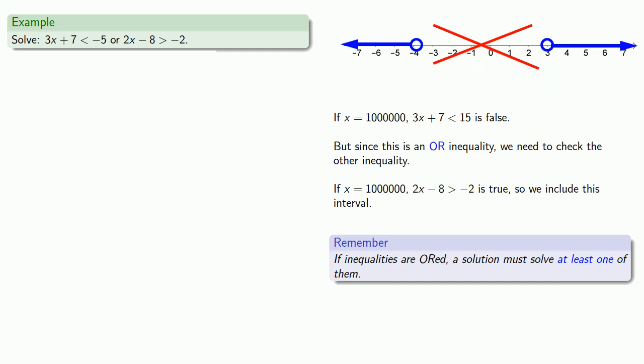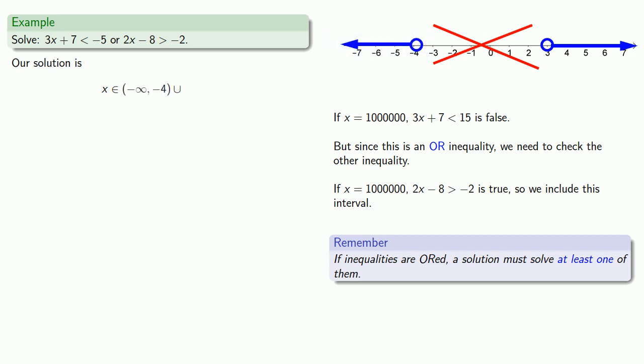Now that we have the graph of the solution, let's go ahead and write our solution in interval notation. There are two intervals that will be unioned together. This first interval goes from negative infinity up to negative 4, excluding negative 4. And this second interval goes from 3 to infinity, excluding both endpoints.